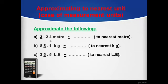Let's apply with the first example: 3.24 meters to the nearest meter. We don't have numbers before the units digit, which is 3 here, so we look directly at the tenths digit, which is 2, a weak number. That gives nothing to our units, so we keep 3 the same as it is and the decimal part will be cancelled out.